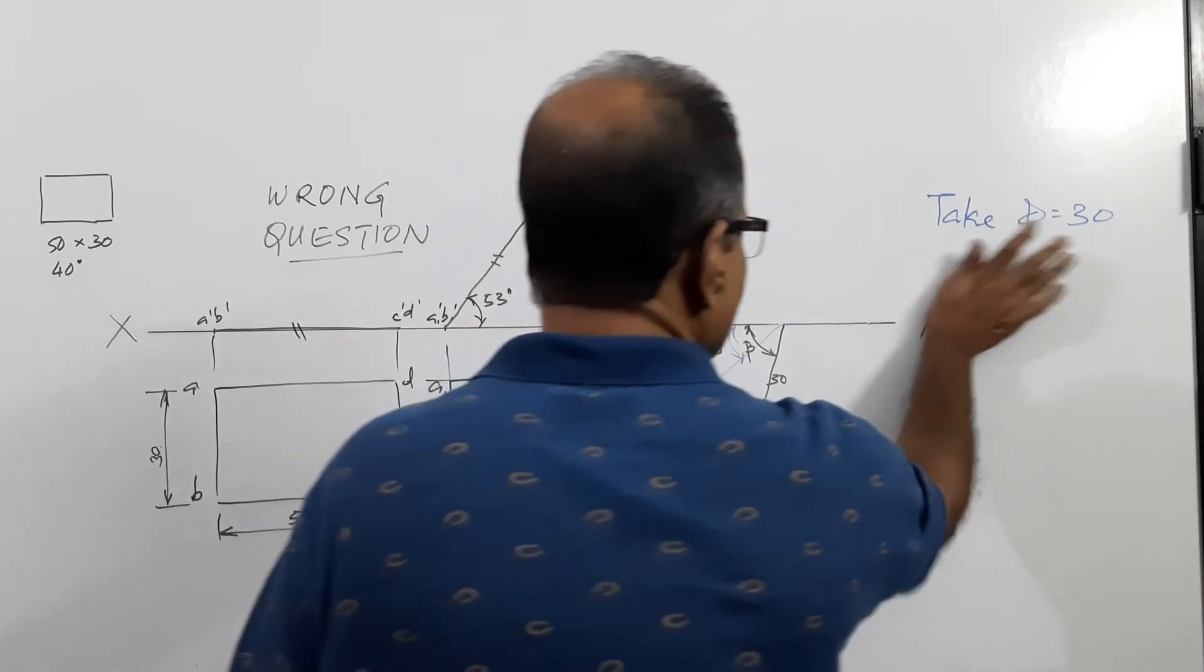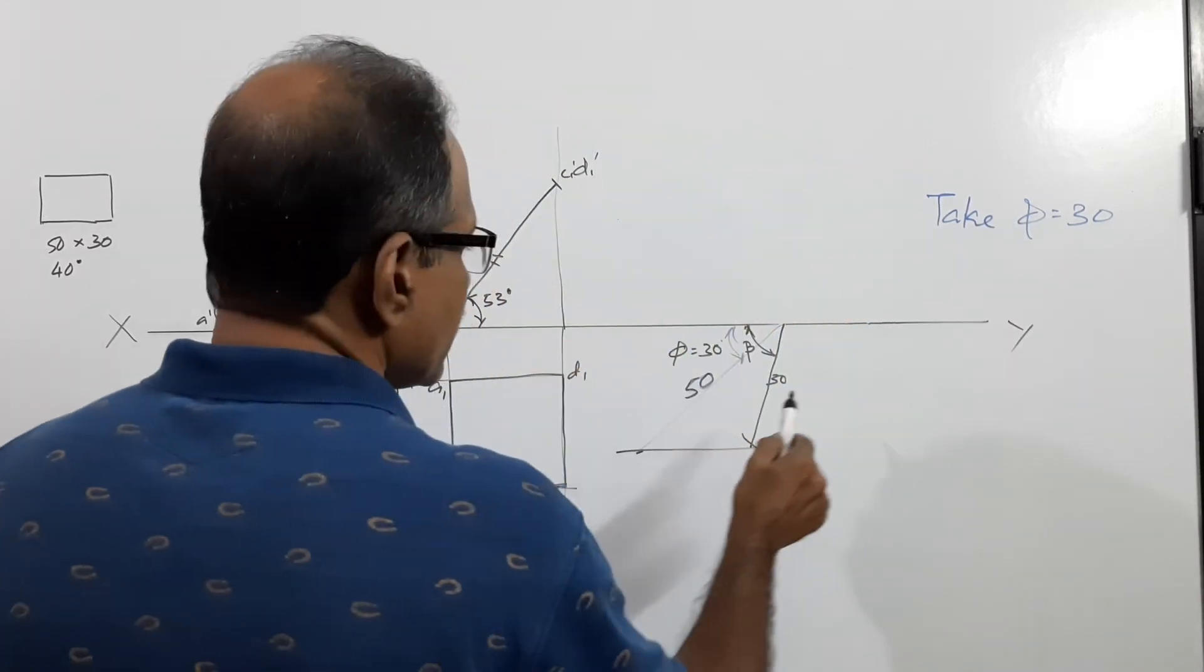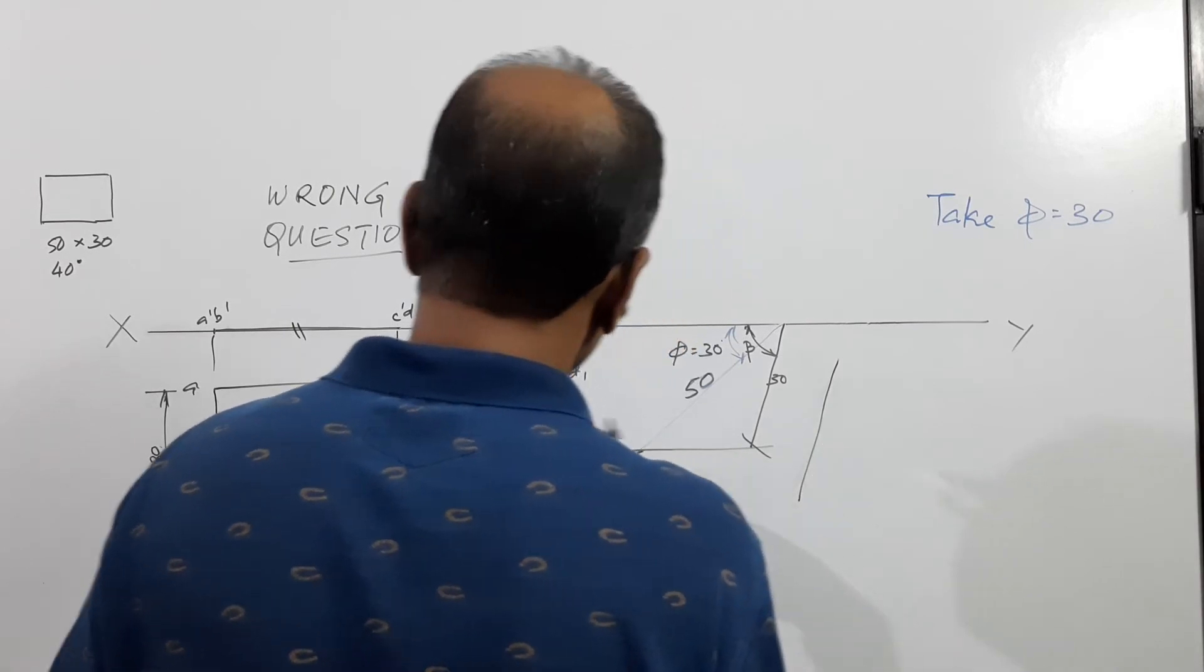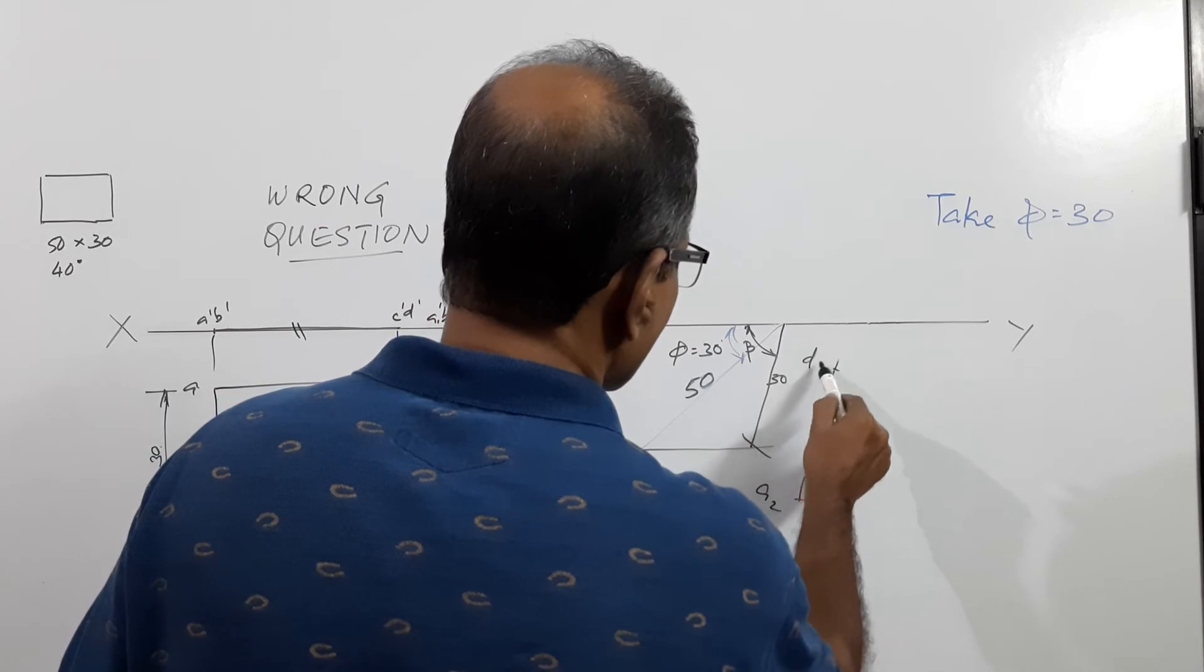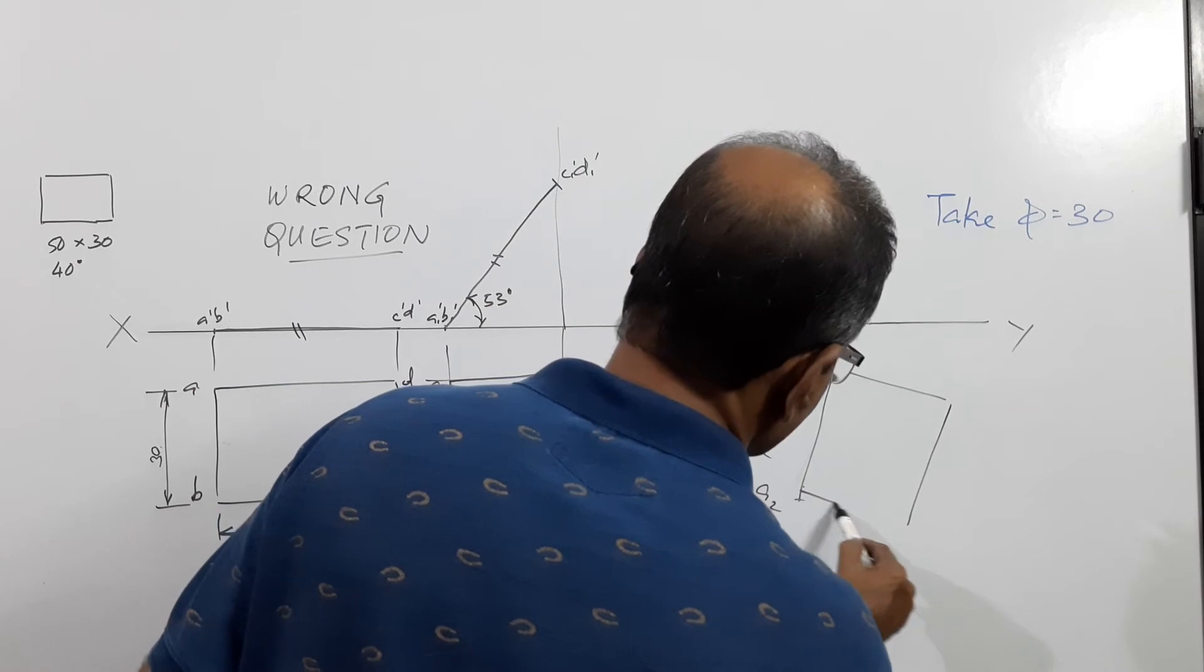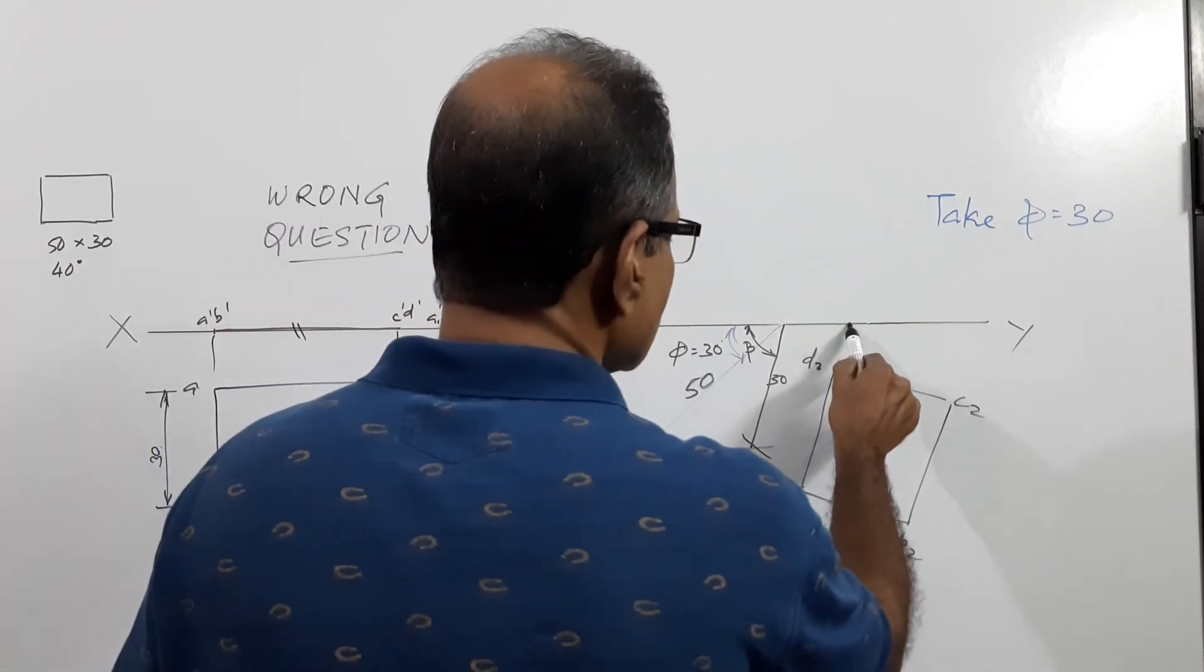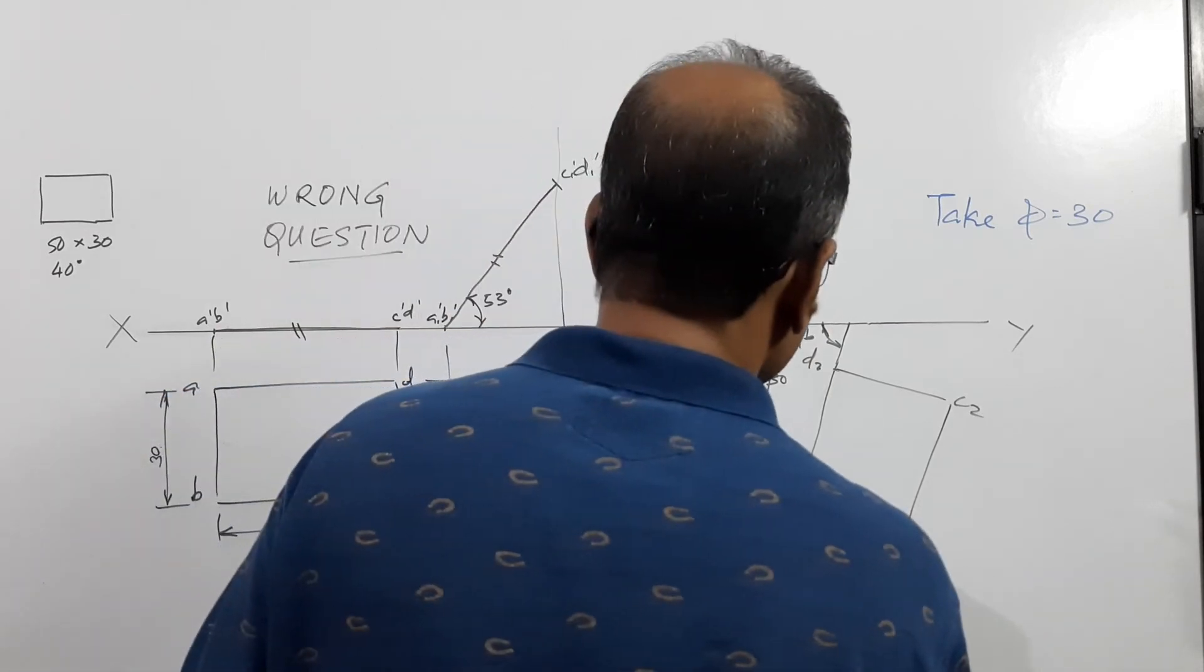How will you redraw the plan? I am changing the line. With this beta I draw a line parallel to this. Draw a line parallel to this, on that I take A2D2, complete the square. A2, B2, C2, D2. This angle is beta. Draw vertical projectors.